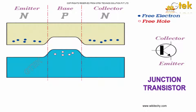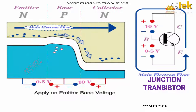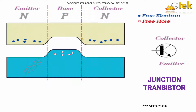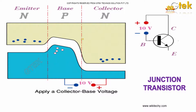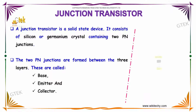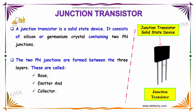Now we will discuss the junction transistor. A junction transistor is a solid-state device. It consists of a silicon or germanium crystal containing two PN junctions.